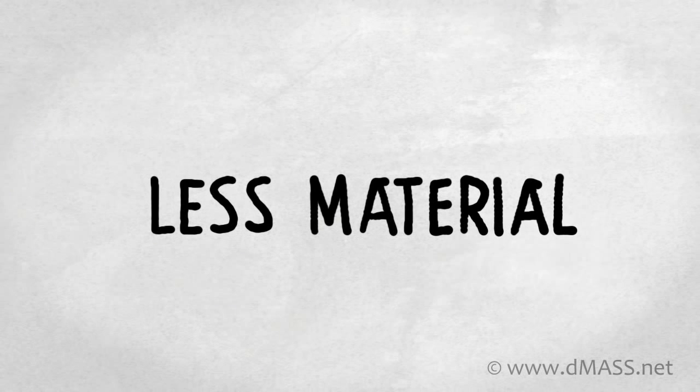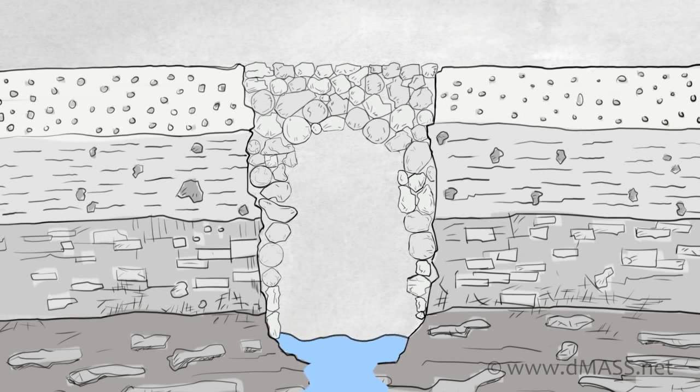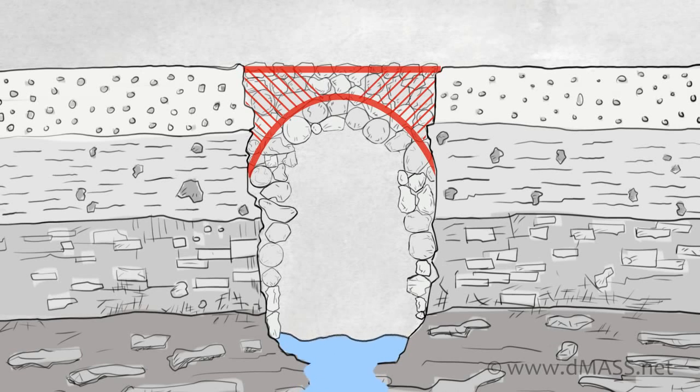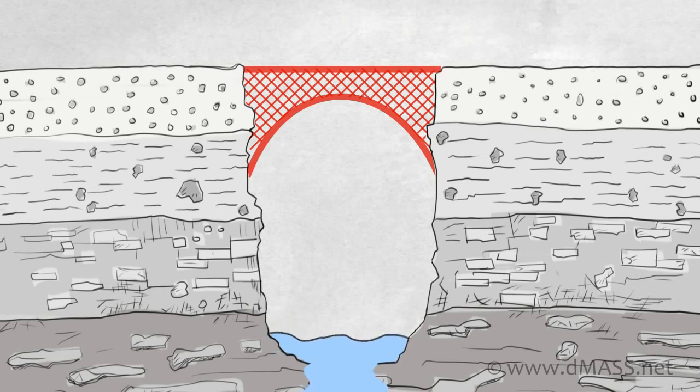So what they did was they replaced the stone above the arch with a triangular truss of iron tubes. And now even more of the mass was eliminated because there was no stone left in the bridge. There was only iron tubes with big spaces in between the tubes.